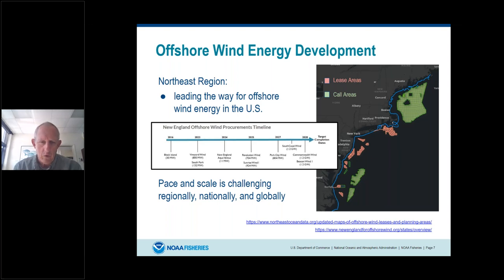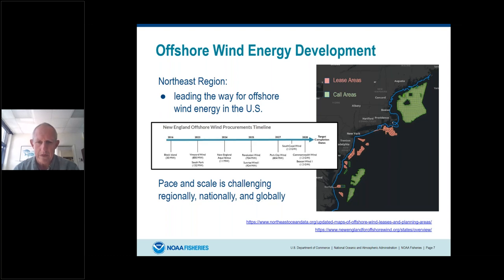The northeast region is where offshore wind energy development is happening at the fastest pace. There are a number of lease areas, with additional call areas that may become lease areas in the future. Block Island Wind was the first operational offshore wind farm, started in 2016. Then Vineyard Wind and South Fork are coming online in 2023, New England Aquaventus in 2024, Revolution Wind and Sunrise Wind in 2025, Park City Wind in 2027, and South Coast Wind, Commonwealth Wind, and Beacon Wind following. The number of these developments is coming online at a rapid pace.